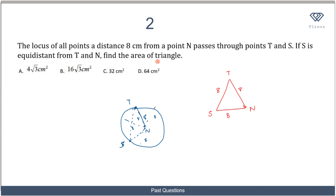Now we need to find the area of triangle TNS. We have TN = SN = ST = 8 centimeters, so all three sides are equal, making this an equilateral triangle. Each angle of an equilateral triangle is 60 degrees.